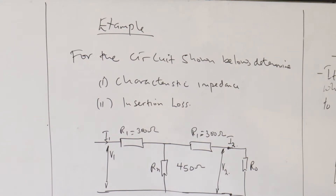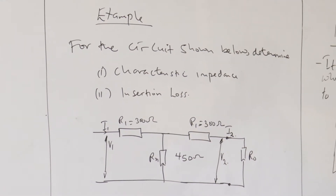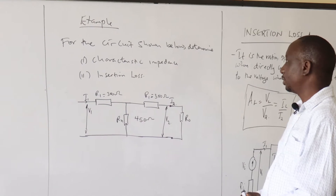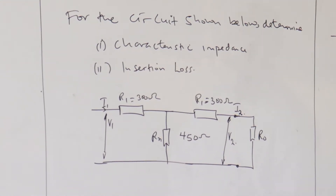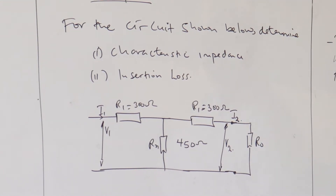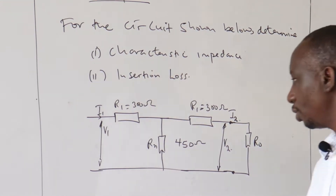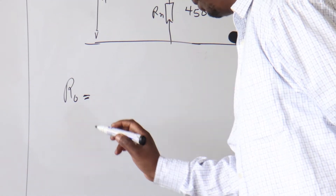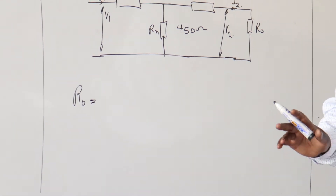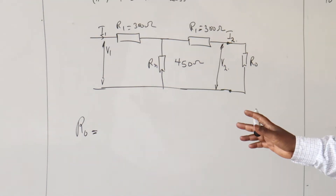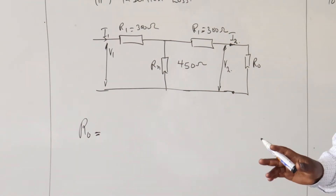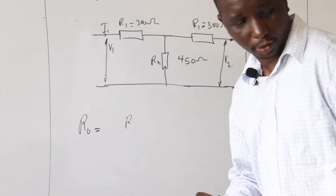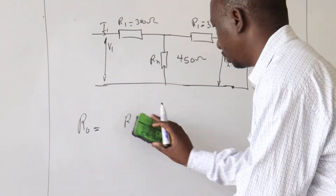This is an example of a circuit that we'll use to find the characteristic impedance RO and also the insertion loss. We can pick RO from a formula which gives us direct solutions. Alternatively, we can get it from the open circuit and short circuit values.